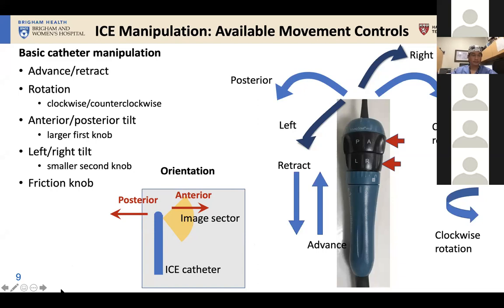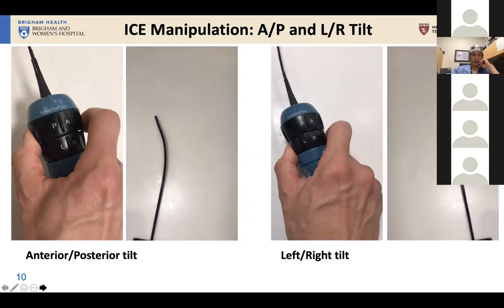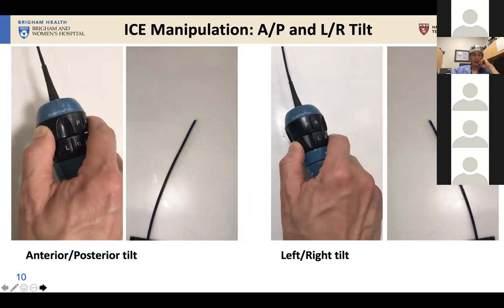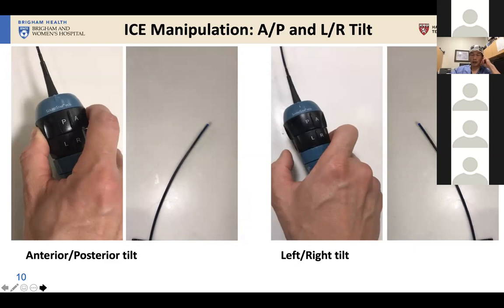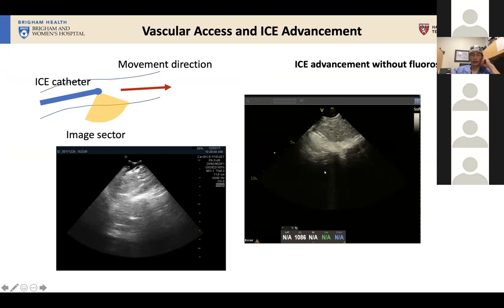When you do anterior-posterior tilt, you're moving the catheter's field left and right. Left and right tilt moves in an orthogonal direction. In general, most folks focus primarily on the AP movement; left-to-right is more of a subtle fine-tuning movement, though there are important situations where that left-to-right movement is essential to understand and use.